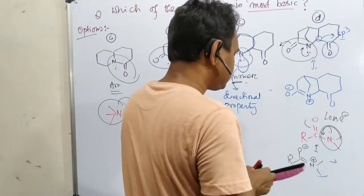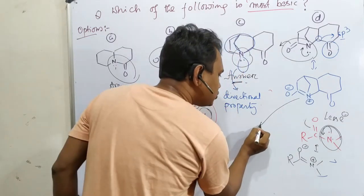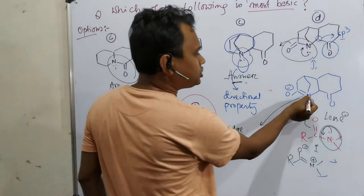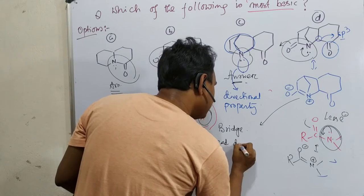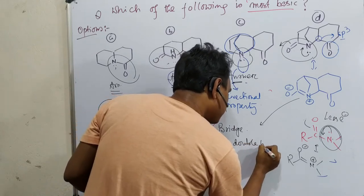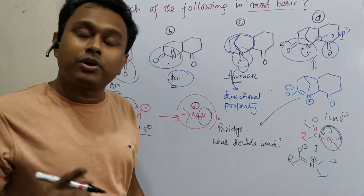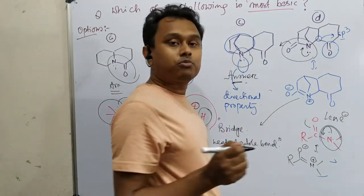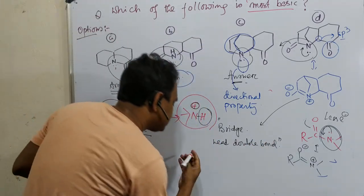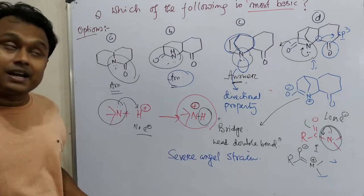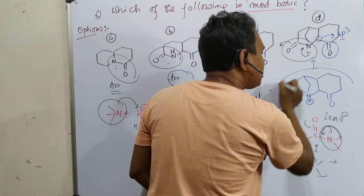Why is this not possible? See, where this nitrogen is, this is actually in a bridge position. This is a bridgehead position, and this double bond is called bridgehead double bond. This is a unique concept, student, you must understand. In bridgehead position, double bond formation is not possible because of severe angle strain. That's why this cannot undergo this canonical form. This is not possible.